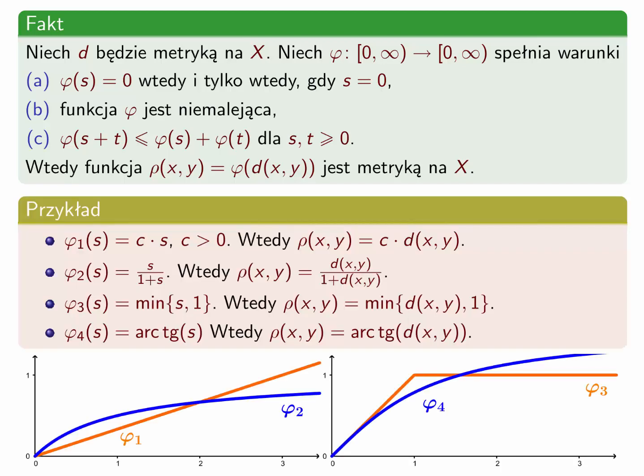Przedstawiam kilka prostych przykładów. W pierwszym funkcja φ1(s) = c·s daje odległość ρ(x,y) = c·d(x,y), gdzie c jest stałododatnie. W drugim przykładzie φ(s) = s/(1+s) daje ρ(x,y) = d(x,y)/(1 + d(x,y)). W kolejnym przykładzie φ(s) = min(s, 1) daje ρ(x,y) = min(d(x,y), 1). Czwarty przykład wykorzystuje arcus tangens. Wykresy funkcji φ1, φ2, φ3 i φ4 zostały umieszczone na ekranie.